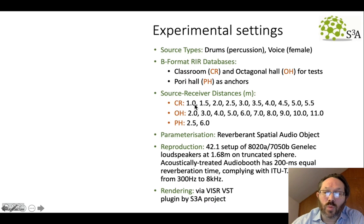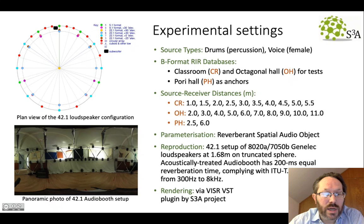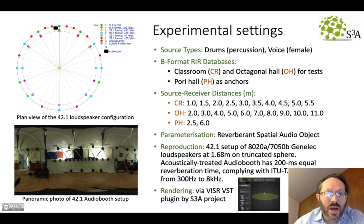These two test rooms provided us a range of 10 different distances in each case. For the classroom from one meter to five and a half meters, and the octagon hall from two to eleven meters. With the anchors, the references from the Pori Hall, chosen to cover that overlapping region in the middle to set the scale of the ratings. We encoded, of course, with this reverberant spatial audio object encoding. And the reproduction was done over a 42.1 loudspeaker setup shown here in our audio booth. And the rendering was done with the Visor VST plugin from the S3A project.